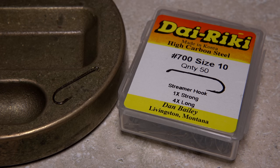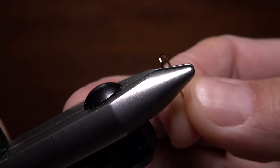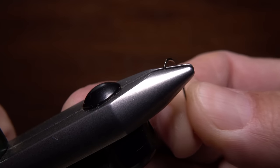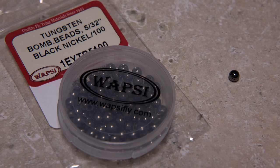For a hook, a Dairiki No. 700 in size 8 or 10 is a good choice. Start by mashing the barb. This is often necessary in order to get the bead onto the hook. I'm going to be using a 5.32 inch black nickel tungsten bead, the unslotted variety.